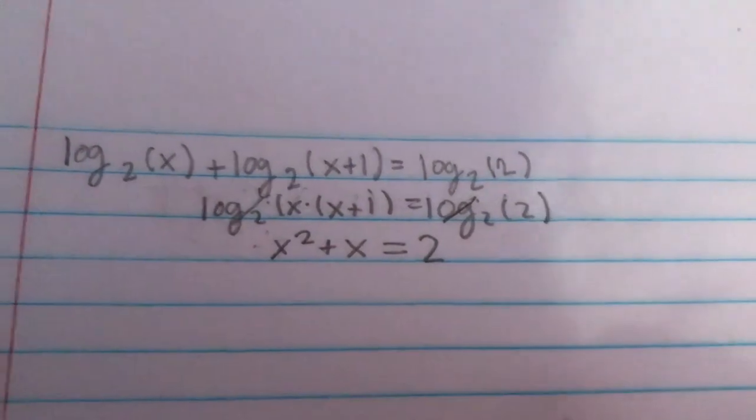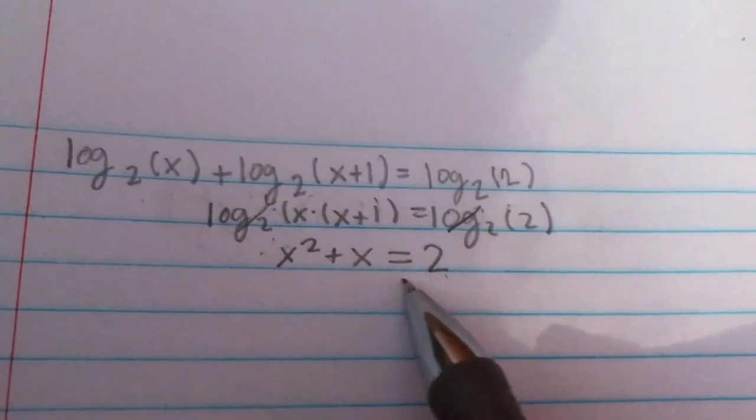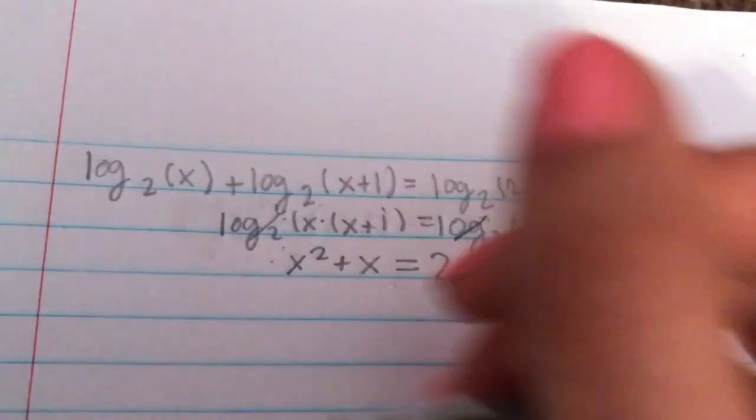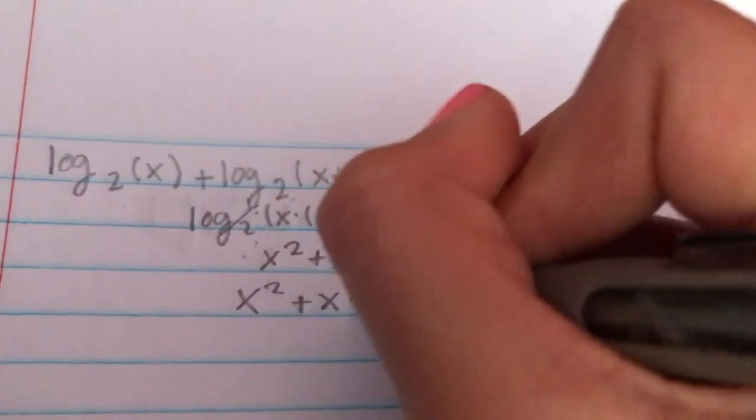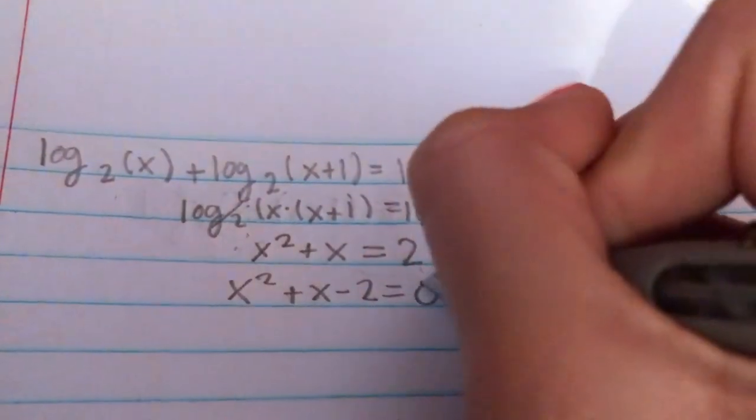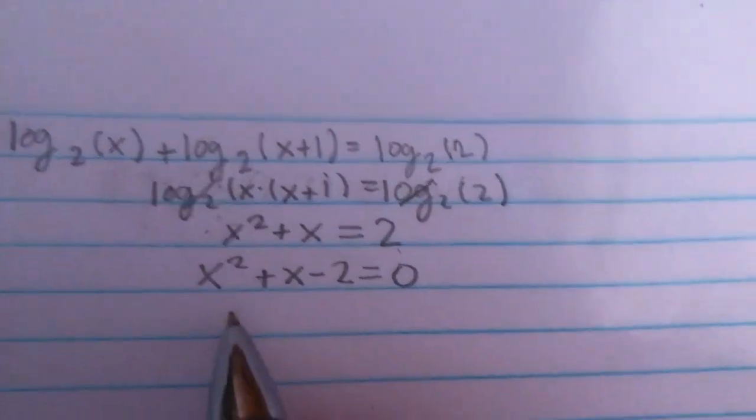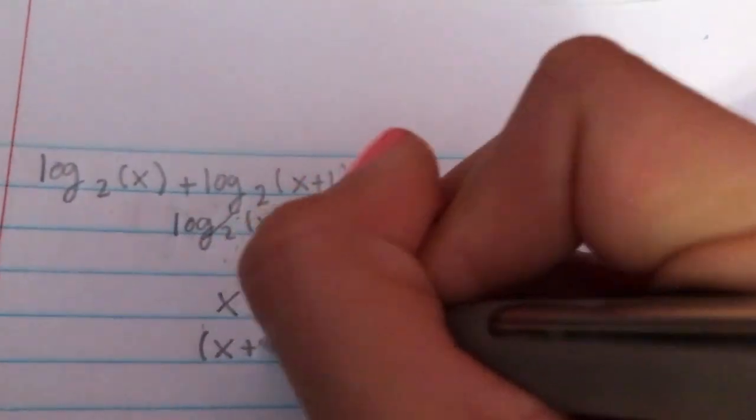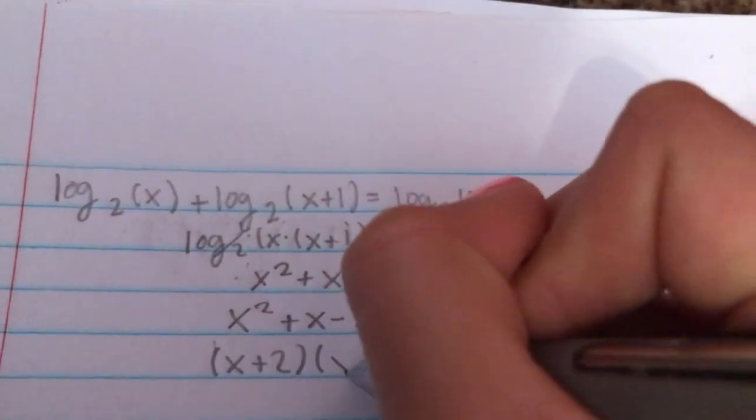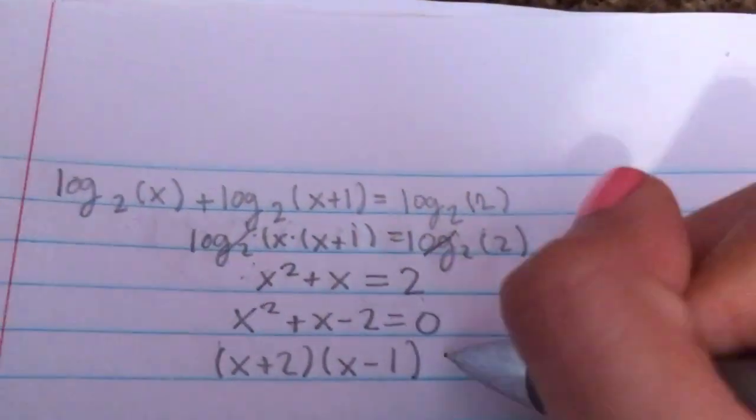So the next thing you would do is you would move over the 2 and set this whole problem equal to 0. So then you get x squared plus x minus 2 equals 0. And then you can factor this out to give you x plus 2 and x minus 1 equals 0.